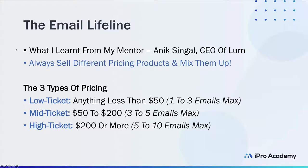You also need to understand the email lifeline, which I learned from my mentor Anik Singhal, CEO of Learn. Simply Google 'Email Lifeline' — it's a great book. Inside the email lifeline, you always want to sell different priced products and mix it up. There are three pricing tiers: low-ticket offers under $50, where you send one to three emails max; mid-ticket at $50 to $200, where you send three to five emails; and high-ticket above $200.